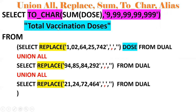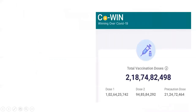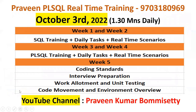So to summarize: REPLACE function is used to remove commas; UNION ALL is used to club result sets; SUM is used to find the aggregate of all columns; TO_CHAR is used to display the number in comma-separated format; and column alias gives the output a proper name like 'Total Vaccination Dose'. Solving one requirement uses three to four concepts together. From October 3rd a new batch is starting — if you're interested, reach out. If you like the content, please subscribe and share the channel.